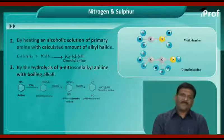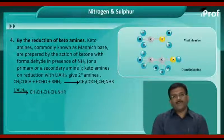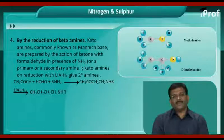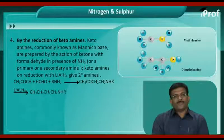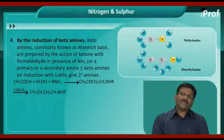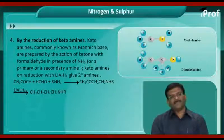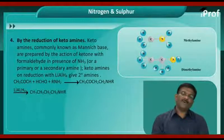Next method: by the reduction of ketoamines. Ketoamines, commonly known as Mannich base, are prepared by the action of ketones with formaldehyde in the presence of ammonia, or a primary or secondary amine. Ketoamines on reduction with lithium aluminum hydride give secondary amines (2° amines).